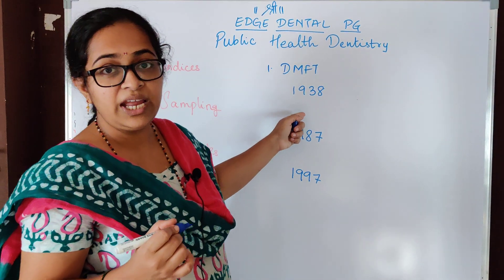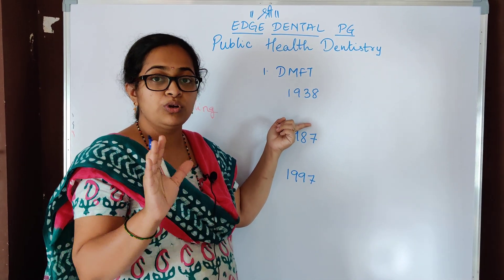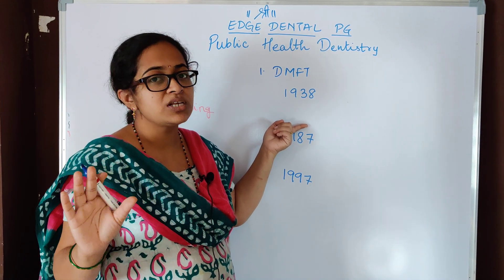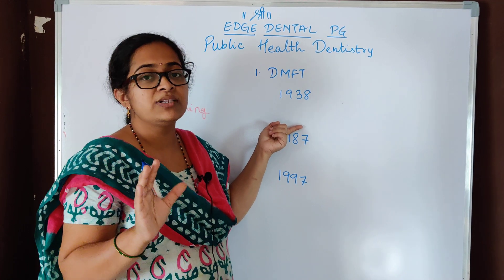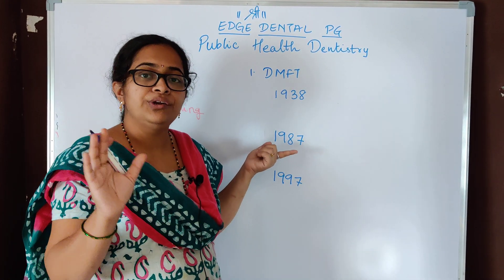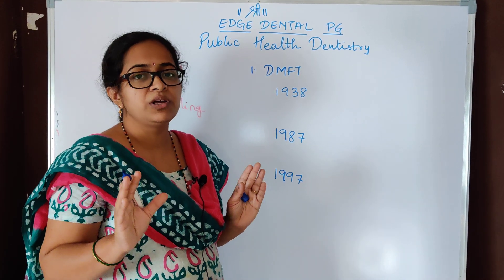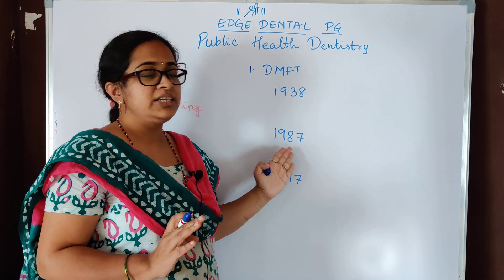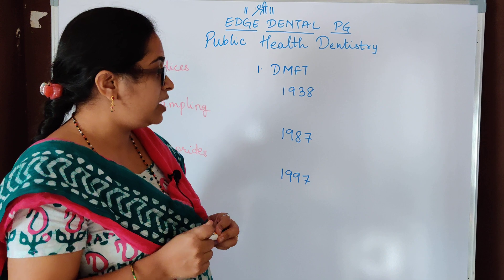In 1938, the criteria given for D was that the tooth should be decayed. Only 28 teeth were to be considered — third molars were not included. Teeth missing due to caries would be considered as M, and a tooth restored due to caries would be considered as F. These were the plain simple criteria for DMFT in 1938.